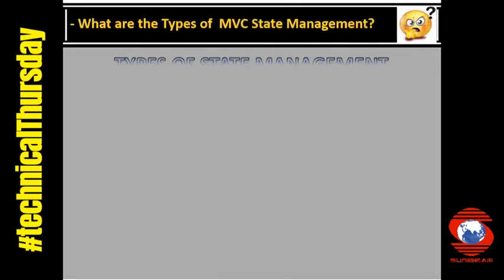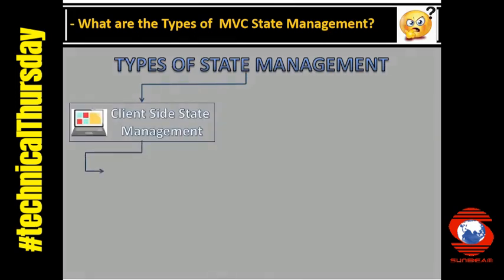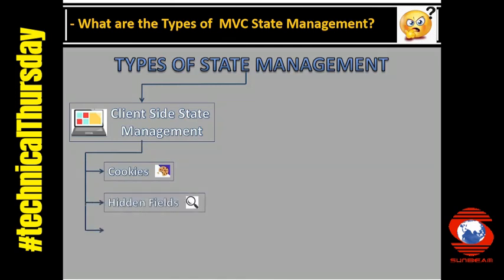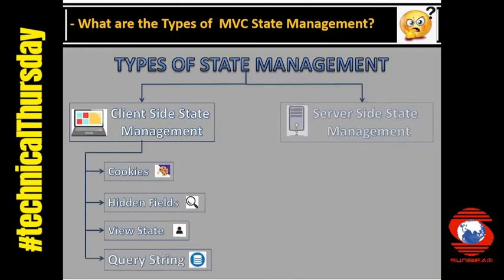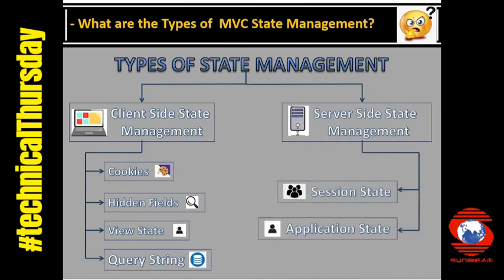What are the types of MVC state management? There are two types. First is client-side state management, which has four techniques: cookies, hidden fields, view state, and query string. In server-side state management, there are two techniques: session state and application state.